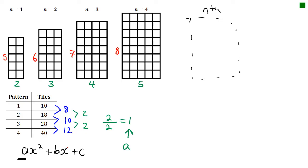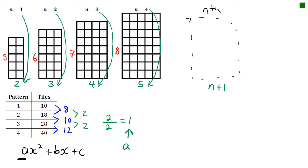We need to relate each number in the pattern to the side and the bottom. So in pattern number 1, the bottom was 2. For pattern number 2, the bottom was 3. In pattern number 3, the bottom was 4. And in pattern number 4, the bottom was 5. We should be able to see that every time we're adding 1 onto the pattern number. So for our nth pattern, we'll have N plus 1.